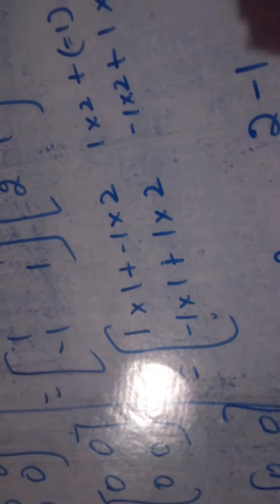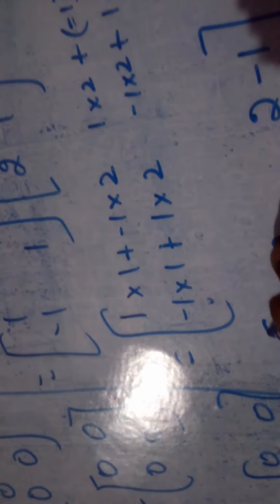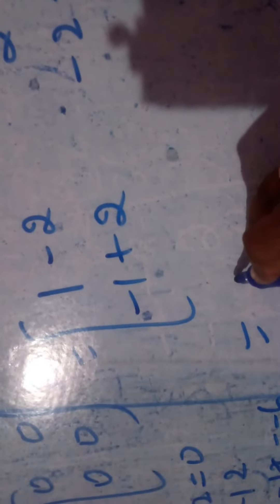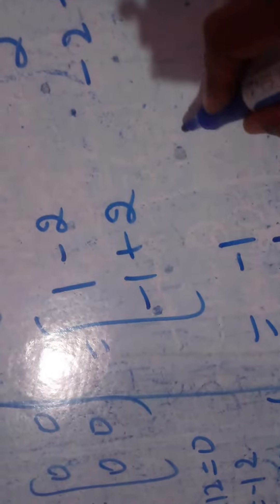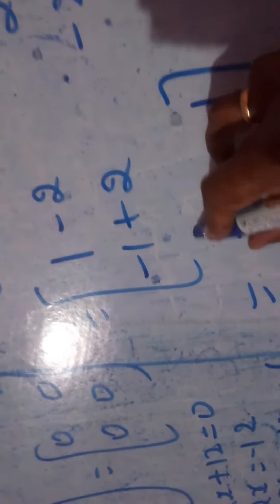This will be 2 minus 2, which is 1, minus 1 here, plus 1 here is 1, and here it is minus 1. So this is the matrix that we got.